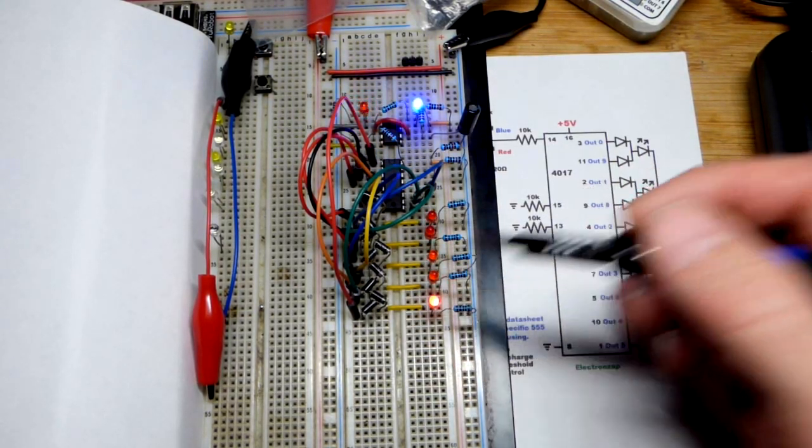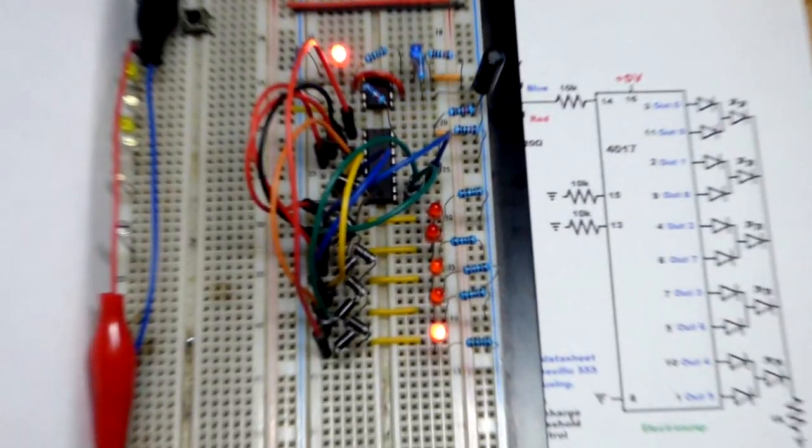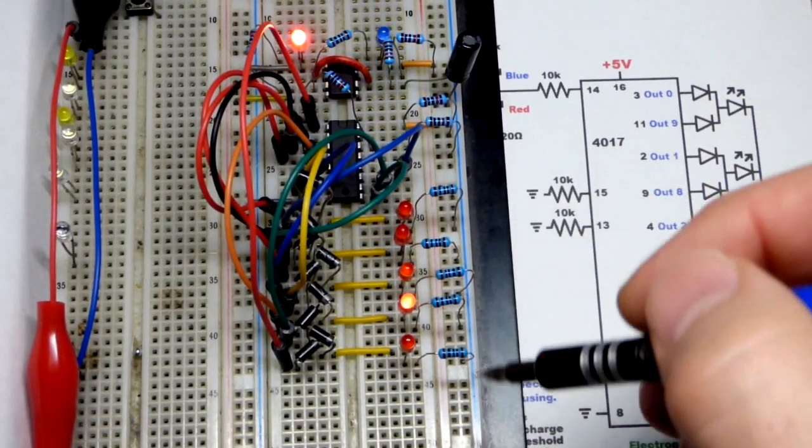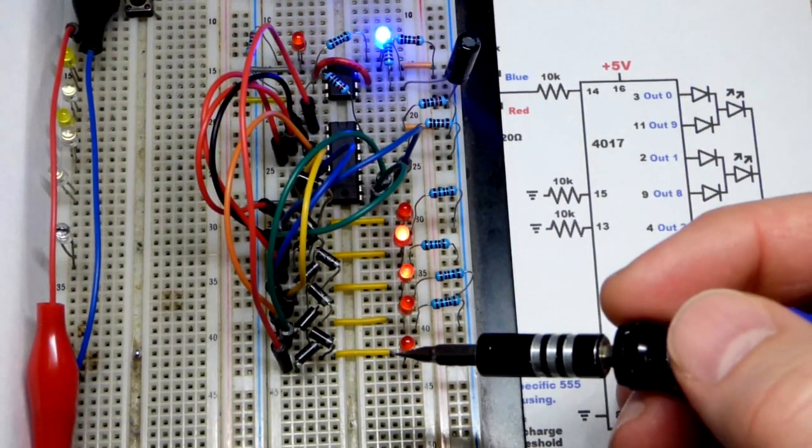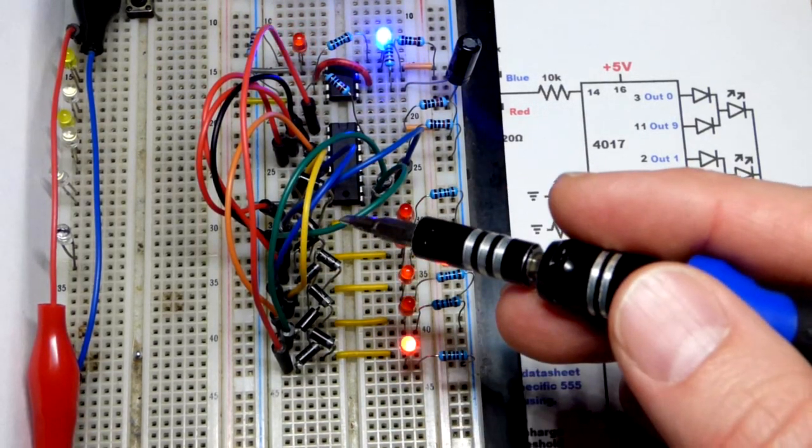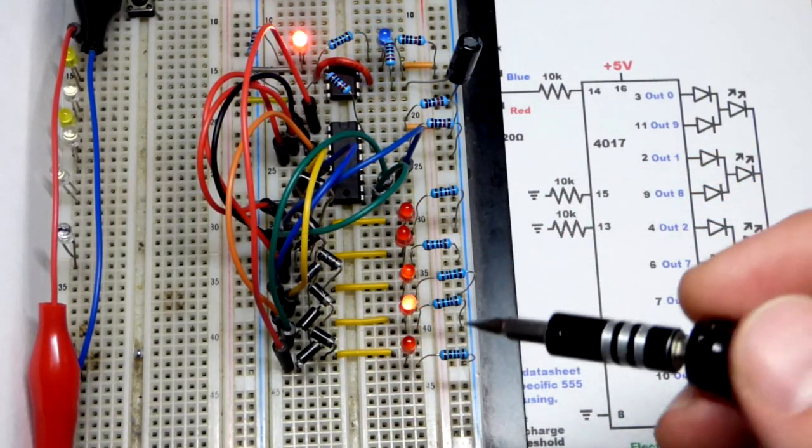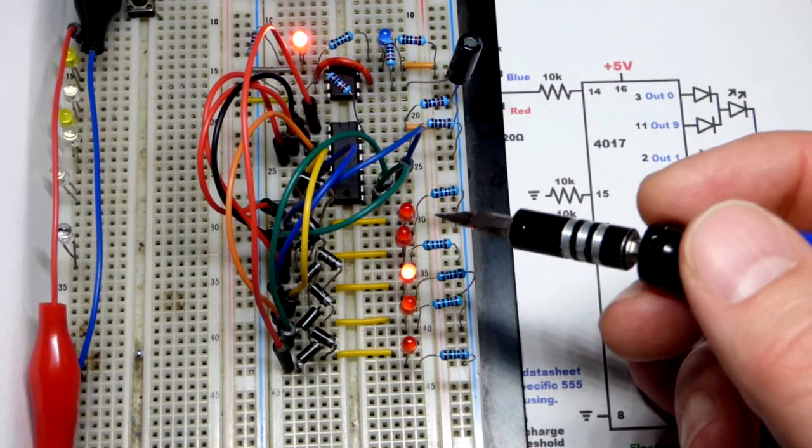Now all these LEDs have two outputs connected to them and they're all headed to ground right there. So we need diodes to keep one output being high from going into the output while it is low, because only one output could be high at a time.